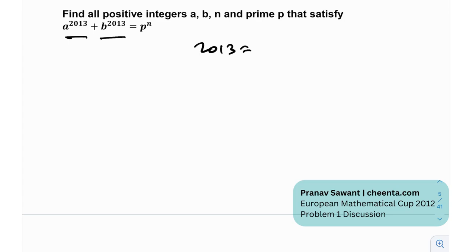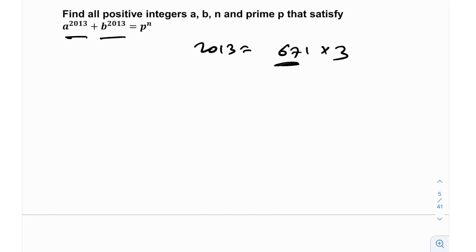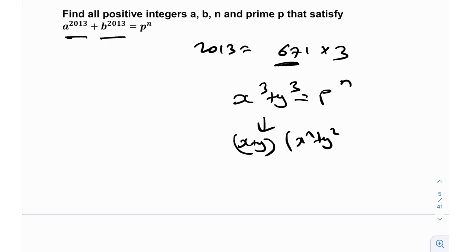A good thing to note is that 2013 is actually 671 times 3. So if I can somehow get rid of the 671, I can reduce it to something like x cubed plus y cubed equals p to the power n. That can be factorized as (x + y)(x² + y² − xy) = p^n, and that's something we can deal with.